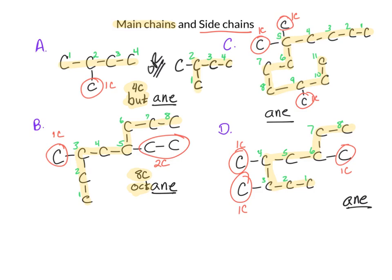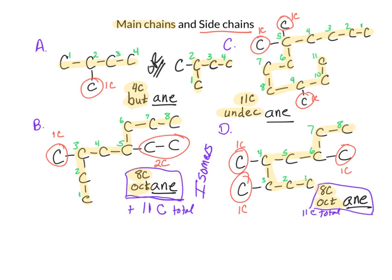And letter C, you don't know this one, it's not in your list, but if you have 11 carbons, it's called undecane, like undies, U-N-D-E-C-A-N-E. So undecane. And letter D, we're going to find that we had eight carbons long, so this will be another form of octane. Now the fact that we have two different octanes, but they are attached in different ways, these two are going to be called isomers. We'll discuss that much later.